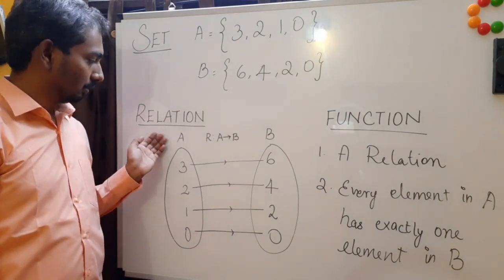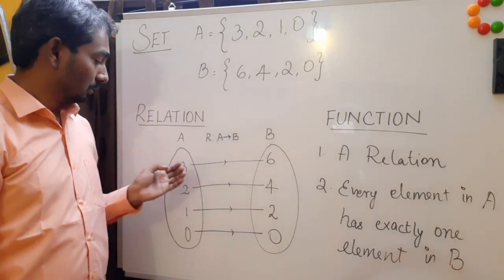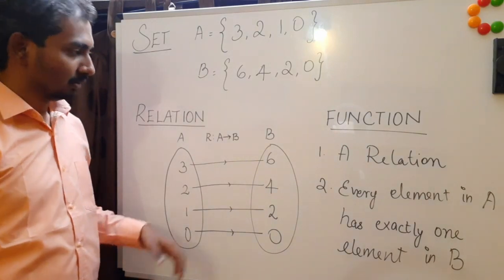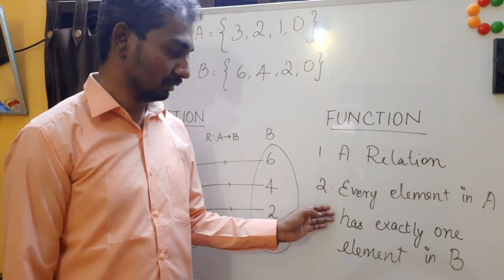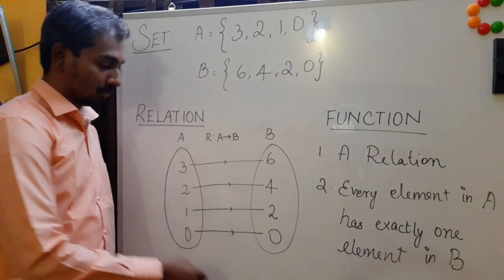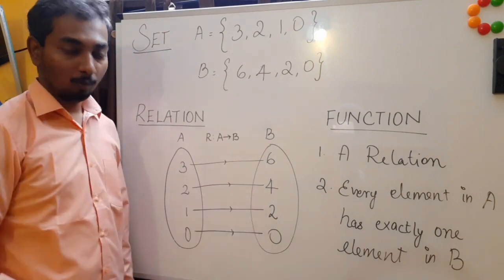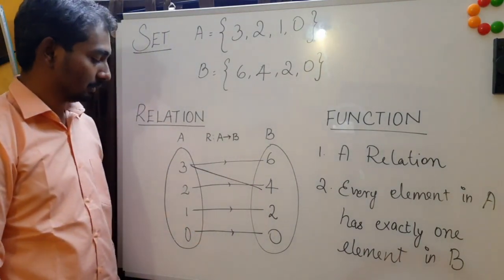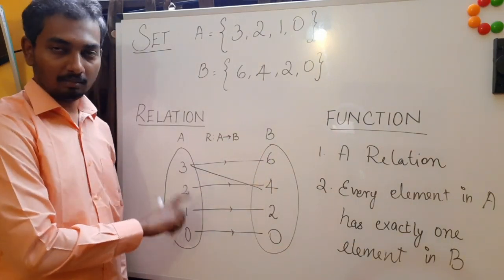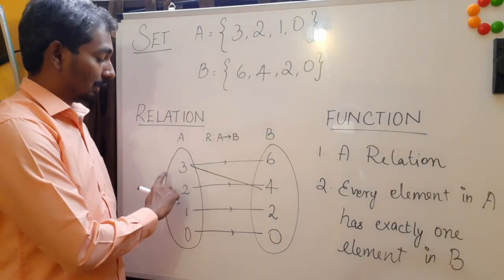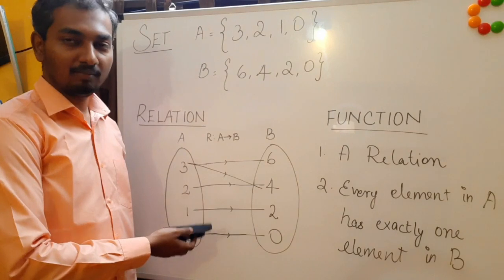We know what a relation is. Here we define a relation between two sets A and B, denoted as R, A related to B, where elements in A are associated with elements in B. A function is a relation with an extra condition that every element in set A has exactly one element in set B. This is a relation and also a function because every element in A has an element in B, whereas if you establish a relationship where 3 has association with both 6 and 4 of set B, this is a valid relation but not a function because an element in A has more than one association with elements in B.